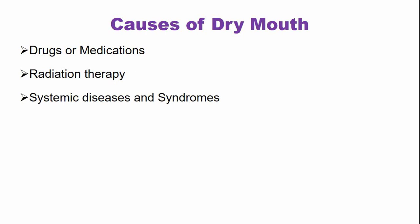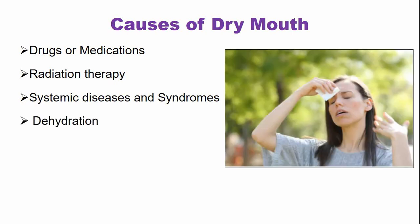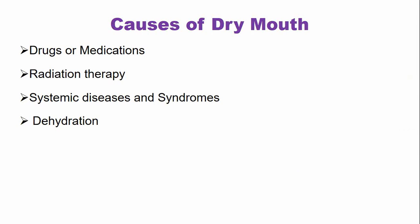Besides this, there are systemic diseases and syndromes that can cause dry mouth, such as diabetes, HIV, and Sjogren's syndrome. These are a few examples among the systemic diseases and syndromes that can cause dry mouth. Dehydration, either because of high temperature or because of the side effect of a drug such as diuretics, can also cause dry mouth.